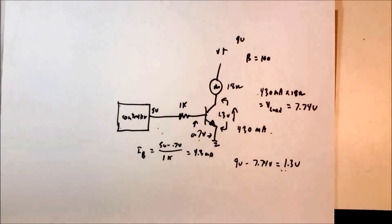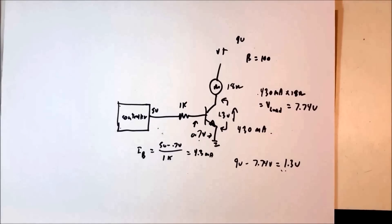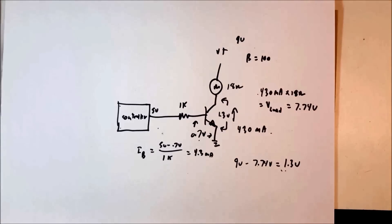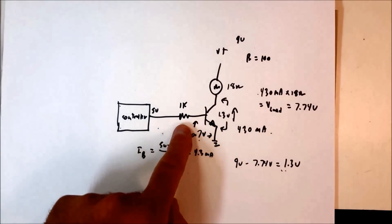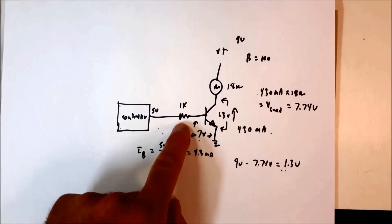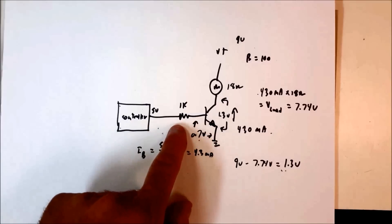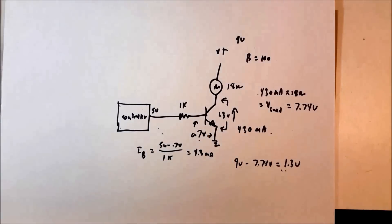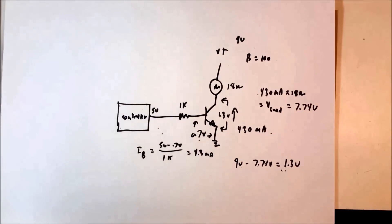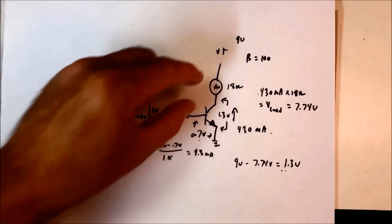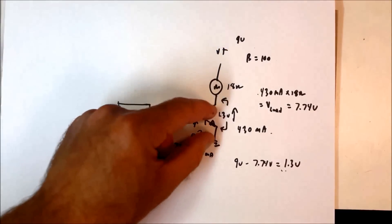That means the voltage across our emitter-collector is 1.3 volts. That's fairly high — when you compare it to the typical saturation voltage of 0.2 volts, that means our transistor is not saturated in this case. The reason it's not saturated is because we used too large a base resistor, which reduced our base current to the point where we could no longer saturate the transistor. We want the transistor to be saturated so that most of the power is across the load and not across the transistor.